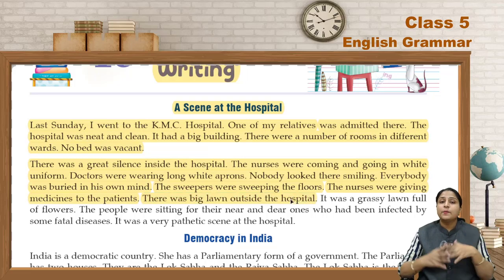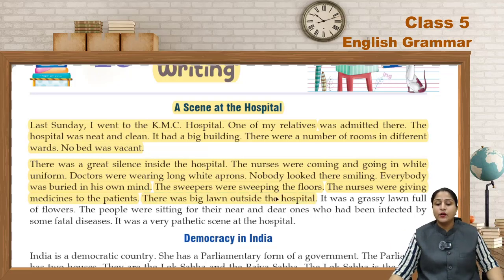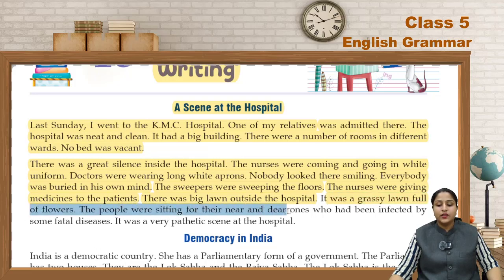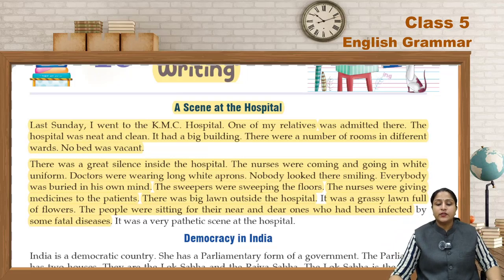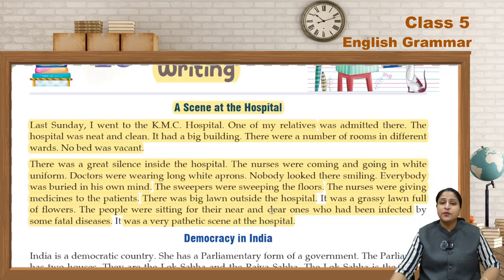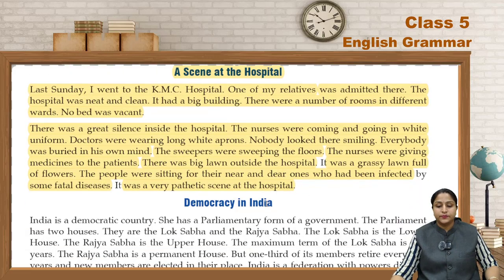Hospital ke bahar ek bada sa lawn tha. There was a big lawn outside the hospital. It was a grassy lawn full of flowers. The people were sitting for their near and dear ones who had been infected by some fatal diseases. It was a very pathetic scene at the hospital. Toh hospital ka yeh scene bohut hi pathetic tha.